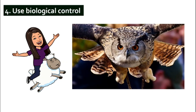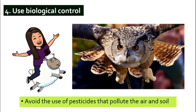And finally, step number four — use biological control. Remember, this is a very important topic. Do you still remember what biological control is? It is a method that farmers use to control the pest population by using the pest's natural enemy. For example, in palm oil plantations, they use owls to control the population of rats. If we practice biological control, we can avoid the use of pesticides and reduce pollution.